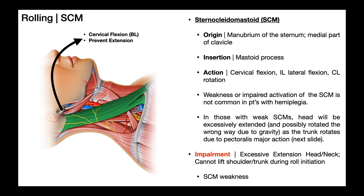One way to imagine this is to picture a person with their head hanging off the bed. If your head is off the edge of the bed and you need to keep it up, your sternocleidomastoids have to contract — either concentrically for cervical flexion or isometrically to hold the head up. If you completely relax the sternocleidomastoid, your head will fall off the edge. So if there's weakness in the sternocleidomastoid, when rolling begins the head can't be supported and it will fall back, causing excessive extension in the neck.